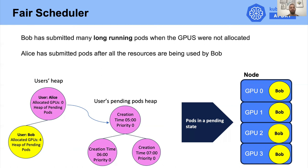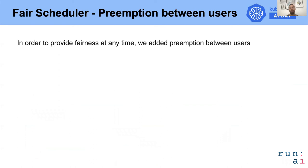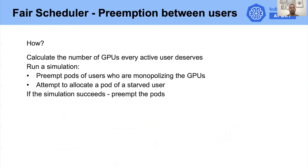In order to solve this problem, we added another algorithm to enable preemption between users. We calculate the number of GPUs every active user deserves at a given moment, then run a simulation where we preempt the pods of users who are monopolizing the GPUs and attempt to allocate pods of the starved user. If the simulation succeeds, we preempt the pods and let our allocation algorithm apply.